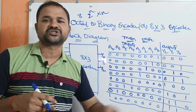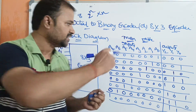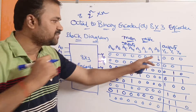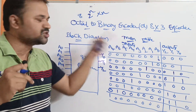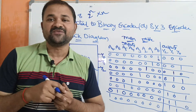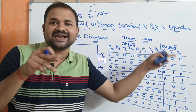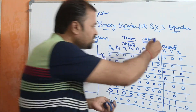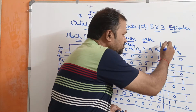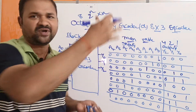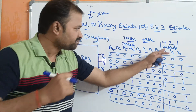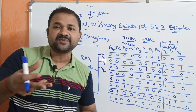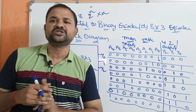Out of 8 inputs, at a time only 1 input is active. In the first row, a0 is active — that means a0 is 1 and all remaining inputs are 0. Let a0 represent decimal number 0. So we will get the output as the binary representation of 0, which is 000.